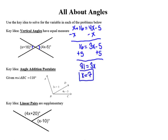The key idea to take away is that vertical angles — those angles across from each other when lines intersect — will always have equal measure.